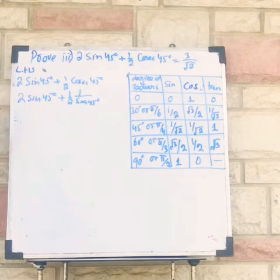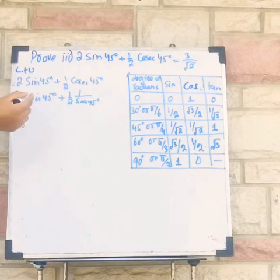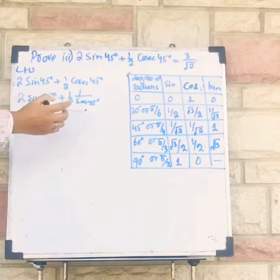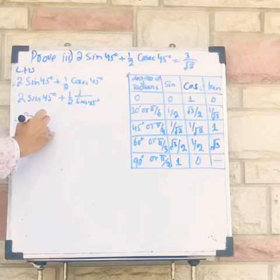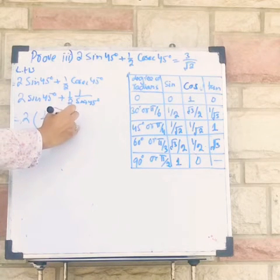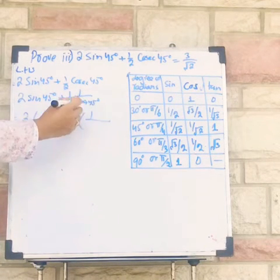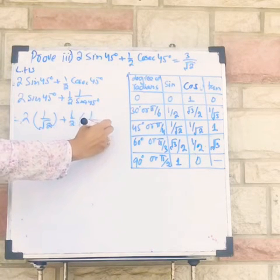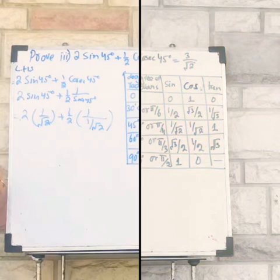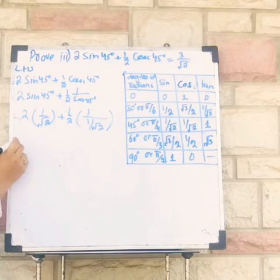Now I have to consider this table for calculation. And 2 sin 45 degrees, 45 degree is equal to 1 divided by under root of 2 plus 1 by 2. Again, sin 45 degree is equal to 1 divided by under root of 2.